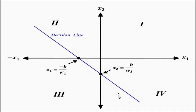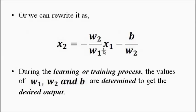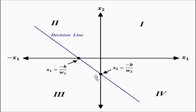The decision line is this separating line which separates one response from the other — whether it is zero from one, or one from minus one. Depending on the activation function, threshold value, weights, bias values, and input combinations, everything can change, and it all happens during the learning or training process. The more input combinations we apply, the more accurately the values of weights and bias can be determined and one response can be separated from the other. This is the whole concept of linear separability.